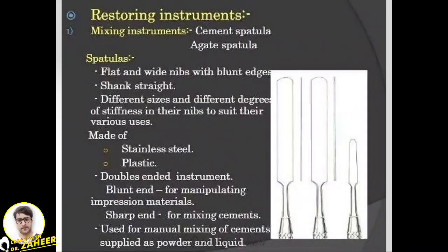Common restoring instruments include the cement spatula and agate spatula. Spatulas have flat and wide nips with blunt edges, straight shanks, and are made of stainless steel and plastic. They are double-ended instruments — one blunt end for manipulating impression materials and the sharp end for mixing cements. They are used for manual mixing of cements applied as powder and liquid. Key points to write include the types, materials, and the two different ends.